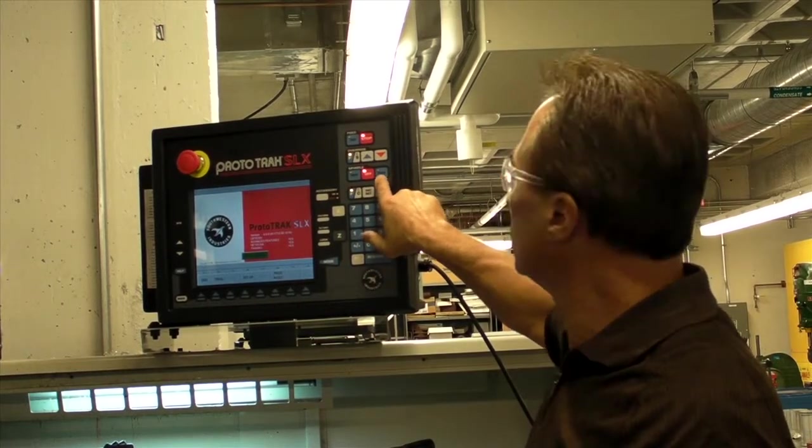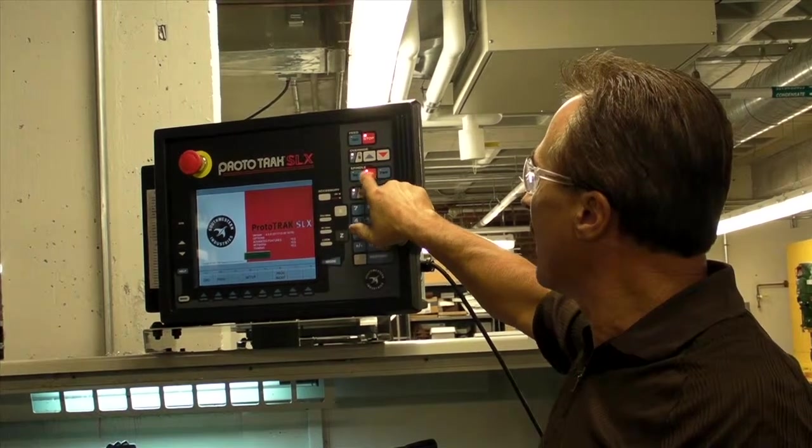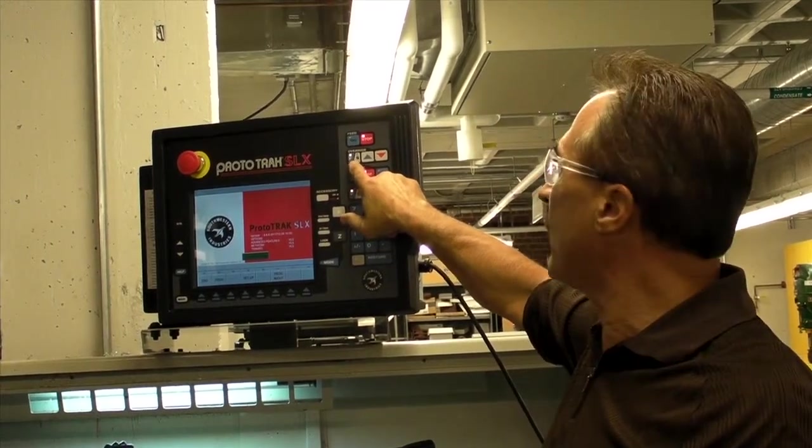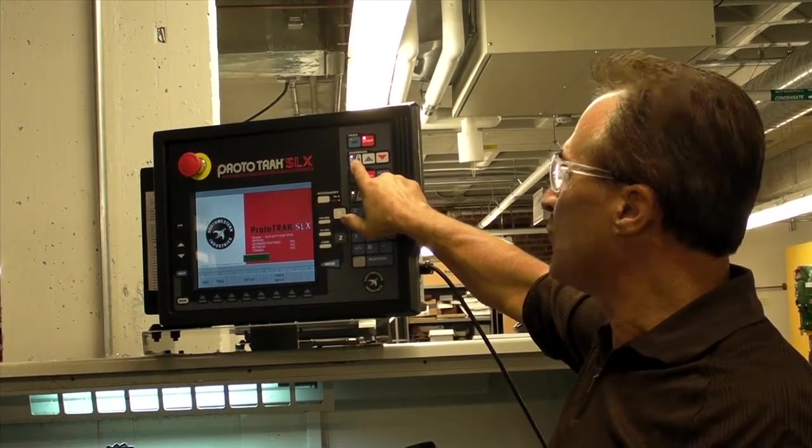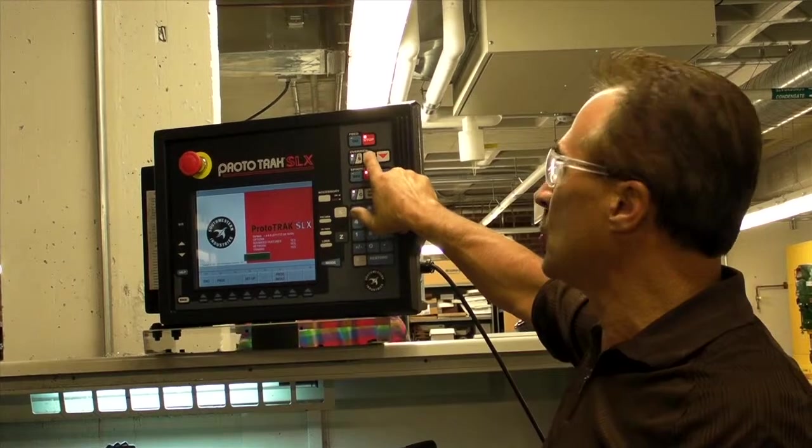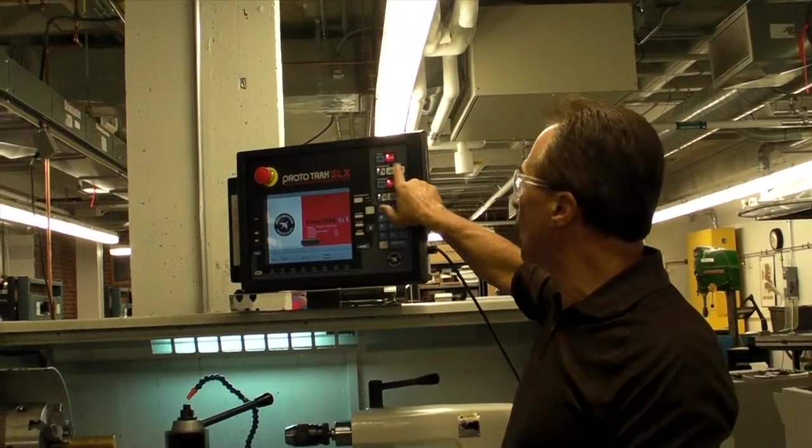Spindle forward, reverse and off. Then you have a feed rate, F for feed rate, S for spindle speed, override. That you can toggle back and forth between the two and increase either the feed rate or the spindle speed or decrease it.